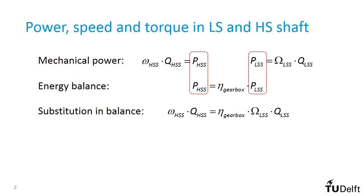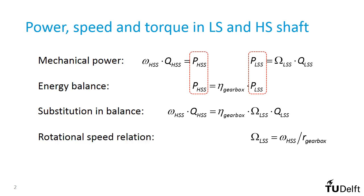In the next step, we substitute the expressions for power to get the relation between torque and speed in both shafts. Furthermore, the rotational speeds are related through the transmission ratio of the gearbox. The efficiency of the gearbox has no effect on this expression, since it is a purely geometrical relation.